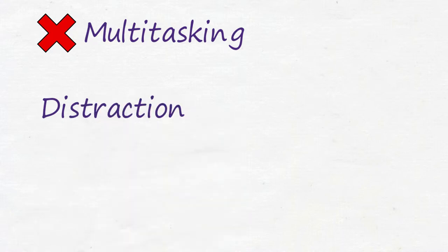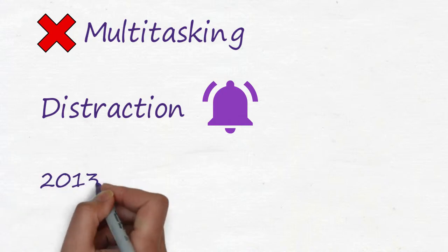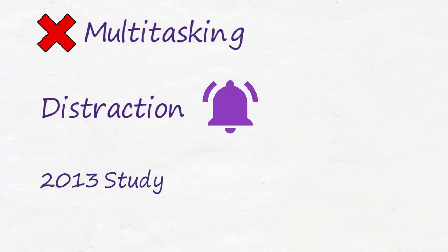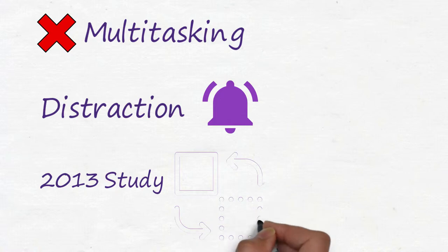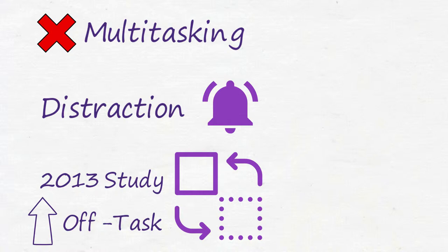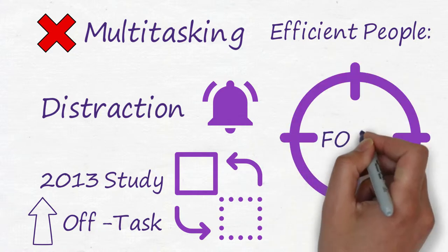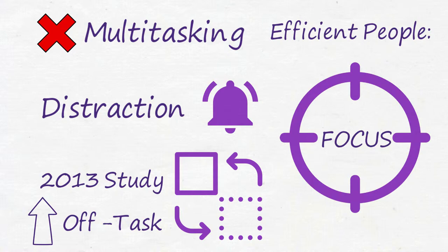Multitasking distracts you from your task. If you are writing a proposal and replying to emails at the same time, you will be distracted by the notification of emails. A study in 2013 showed that people who tend to multitask and switch tasks frequently were more off-task. If you reply to several emails when you are writing a proposal, are you sure that you can write a good proposal? Certainly not. Efficient people don't manage many tasks at once. They focus on one task each time, complete the task, and then start a new one.